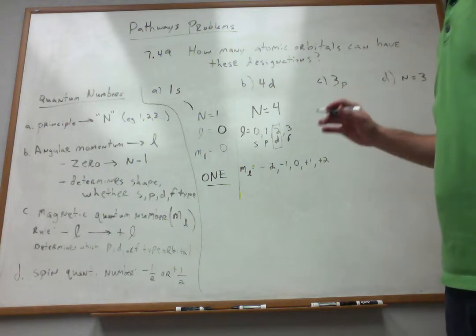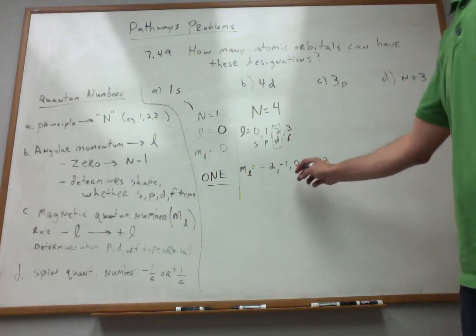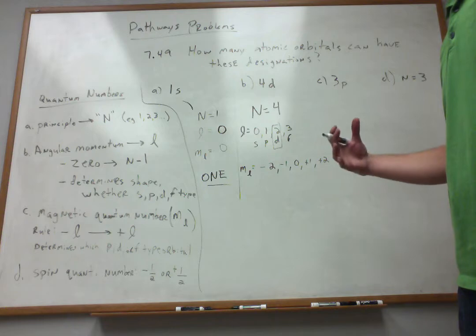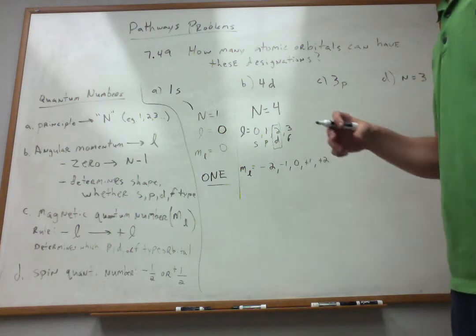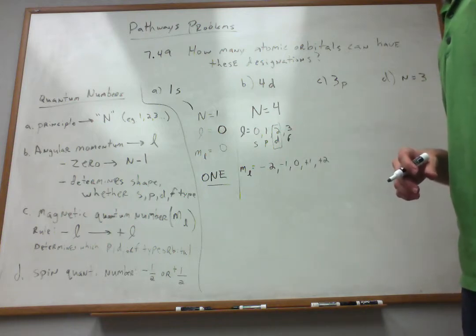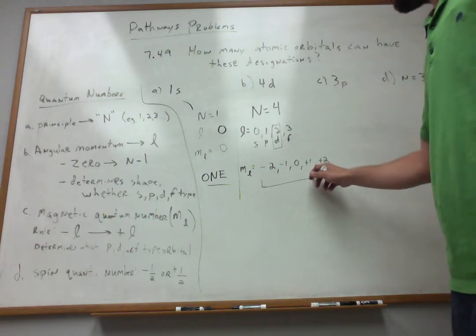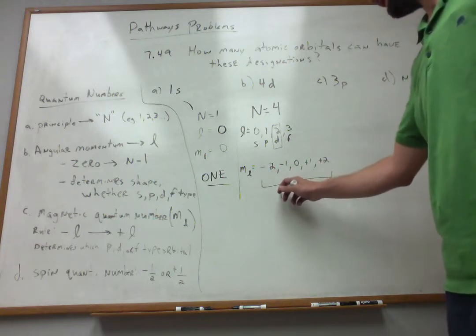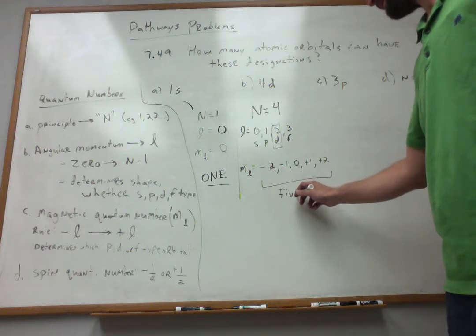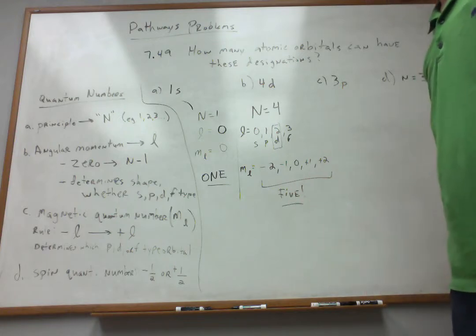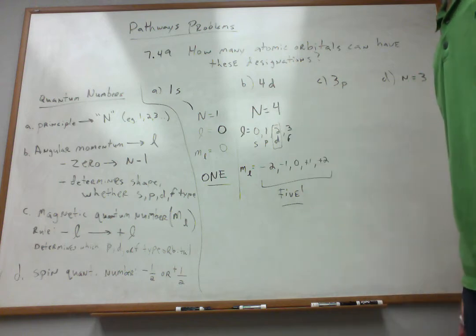So if I specify d, I'm saying l is equal to 2, and these are all my possible orbitals for d-type, or l equals 2. So as a consequence of this, it looks like there are 5 distinct d-type orbitals that I can assign electrons into for the 4-d level.